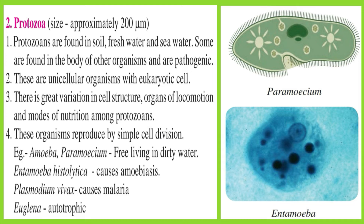2. Protozoa — size approximately 200 micrometers. Characteristics: 1. Protozoans are found in soil, freshwater, and seawater; some are found in the body of other organisms and are pathogenic. 2. These are unicellular organisms with eukaryotic cells. 3. There is great variation in cell structure, organs of locomotion, and modes of nutrition among protozoans. 4. These organisms reproduce by cell division. Examples: Amoeba, Paramecium — free-living in dirty water; Entamoeba histolytica — causes amoebiasis; Plasmodium vivax — causes malaria; Euglena — autotrophic.